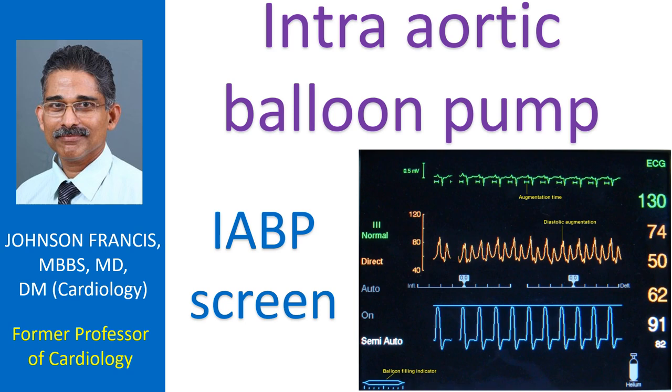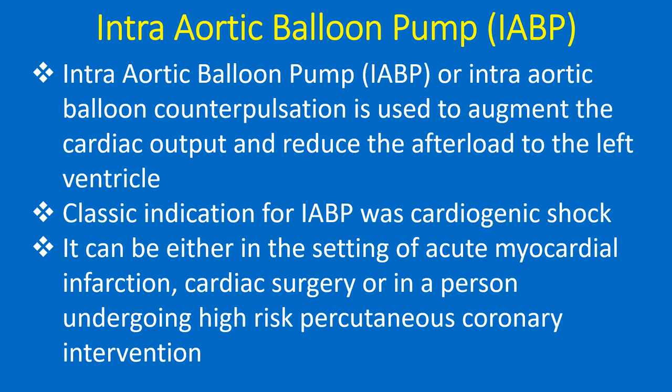Discussion on intra-aortic balloon pump and the IABP SHOCK 2 trial. Intra-aortic balloon pump, or intra-aortic balloon counter-pulsation, is used to augment cardiac output and reduce afterload to the left ventricle. The classic indication for IABP was cardiogenic shock, either in the setting of acute myocardial infarction, cardiac surgery, or in a person undergoing high-risk percutaneous coronary intervention.